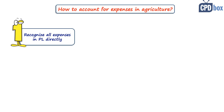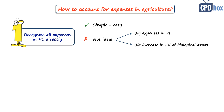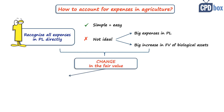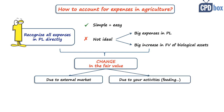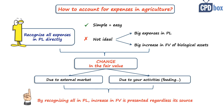Under option one, you treat all expenses in profit or loss. This is a simple and easy approach, but in my opinion it's not ideal, because you would show big expenses in your profit or loss and on the other hand a big increase in fair value of your biological assets. The fair value increases not only due to external market changes but also due to your activities like feeding the animals. So you're effectively presenting the increase in fair value in one bunch regardless of its source or reason.